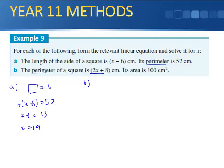Part B. The perimeter of the square is 2x plus 8 cm. Its area is 100 cm squared. So again I've got a square. The total area is 100 cm squared. Well, if this is the total perimeter, then to get one side I've got to divide by 4. So 2x plus 8 divided by 4 equals a side.